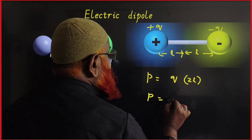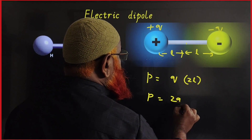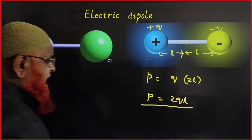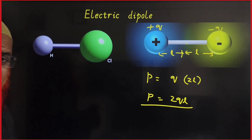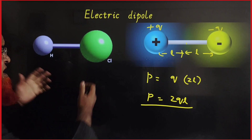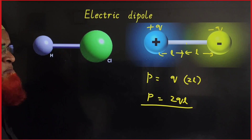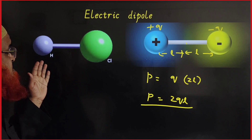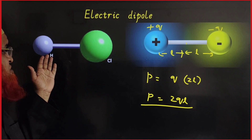Therefore, we can write this as 2QL. The best example for electric dipole is the HCl molecule, which has a partially positive charge.